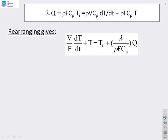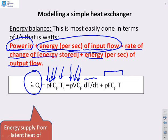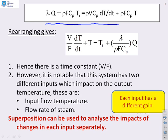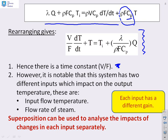I've rewritten the energy balance equation. What I'm going to do next is rearrange it into typical time constant form. I've divided throughout by rho F C_p, and by doing that we end up with this equation: V over F times dT/dt plus T equals T_i plus (lambda over rho F C_p) times Q. You'll notice this is almost in typical time constant form. The time constant is V over F, but what's slightly different is that we've got two inputs — T_i and Q — so that's why it's slightly more complicated than the first order models we've dealt with before.